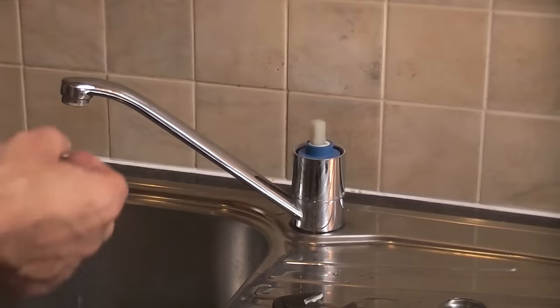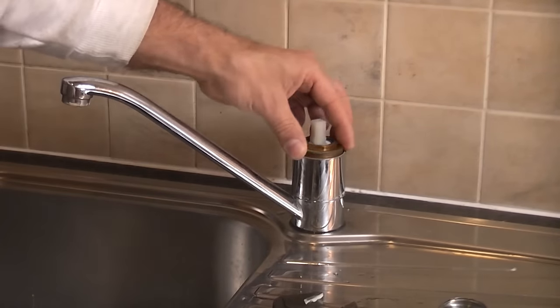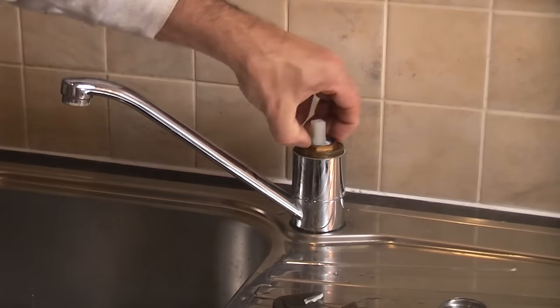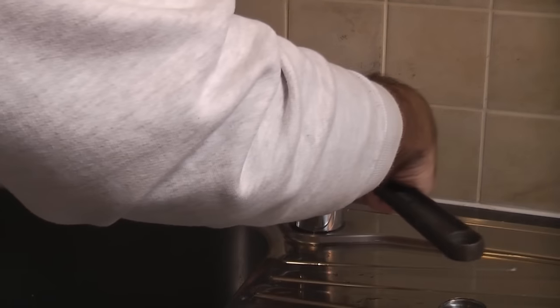Now all we need to do is take the nut, and you do need to ensure that you don't cross-thread it when you're putting this back in. That has now gone in a few turns, so we're just going to tighten that up with the spanner. You don't need to go mad when you're doing this.